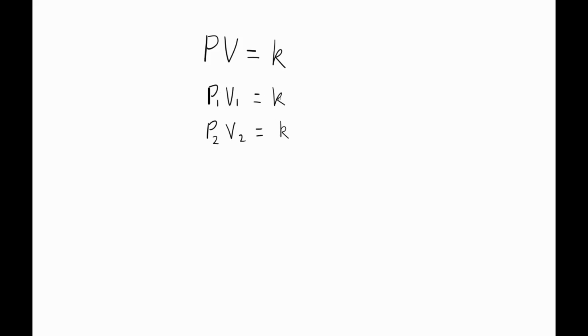If P1 times V1 equals K, and if P2 times V2 also equals K, we don't actually need to find out what K is. We can just write it like this: P1 times V1 must equal P2 times V2. They both equal K, so they both must equal each other. And this way of writing it, P1V1 equals P2V2, is the most common way to express Boyle's Law.